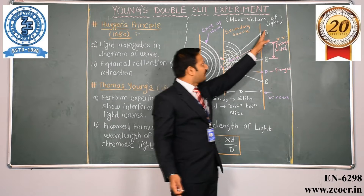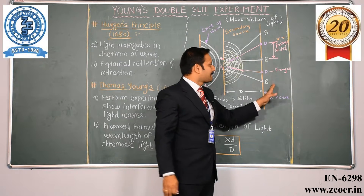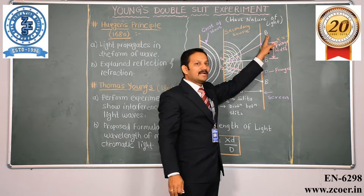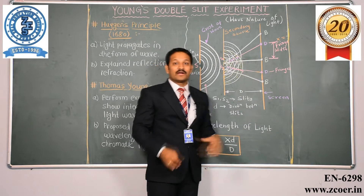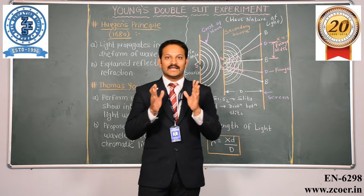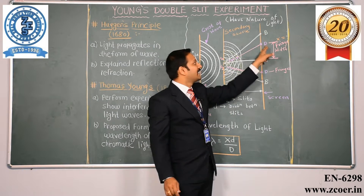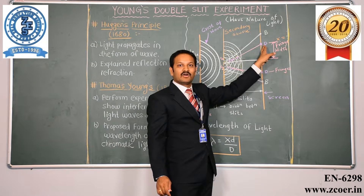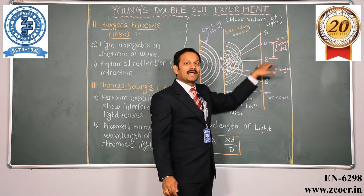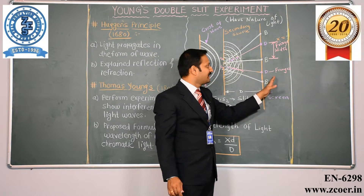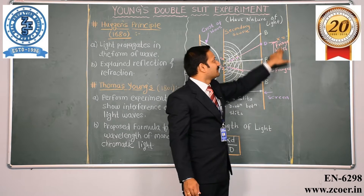So you will get alternate bright and dark bands on this particular screen. You will get a bright band because the crest of one wave overlaps with the crest of another wave — according to the superposition theorem, you will get maximum intensity at this particular point. On the other hand, you will get minimum intensity or minimum amplitude at certain points. You will get alternate dark and bright bands on this particular screen, and the distance between the dark and the bright fringes is nothing but the fringe width.